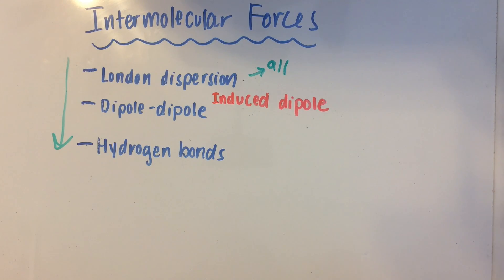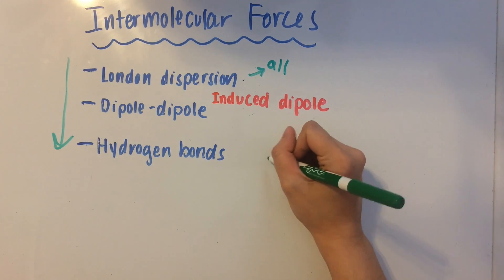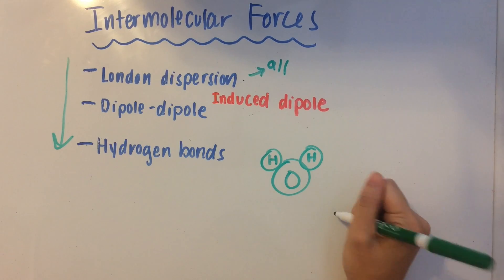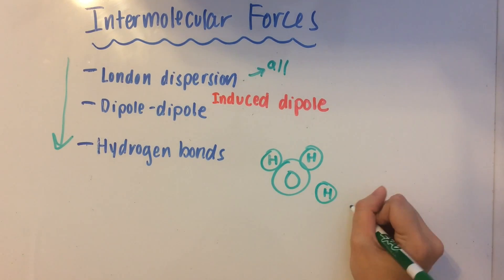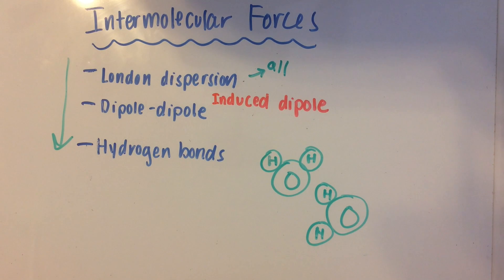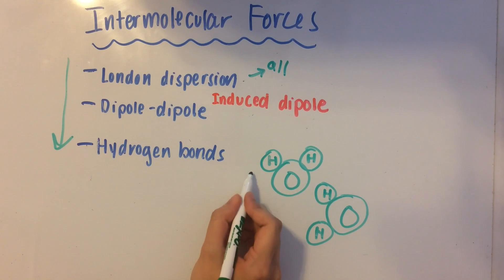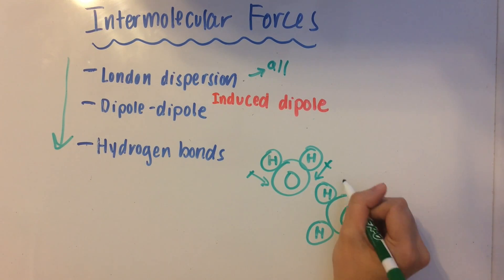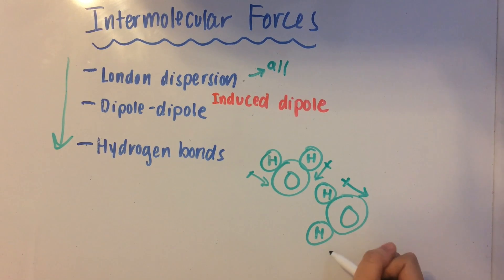So last up is hydrogen bonds. You've probably heard about these in biology or somewhere else earlier. So let me just draw two water molecules. So oxygen is much more electronegative than hydrogen. So the dipoles are going to be going this way. Same thing for this one. The electrons are going to be moving towards the oxygen.